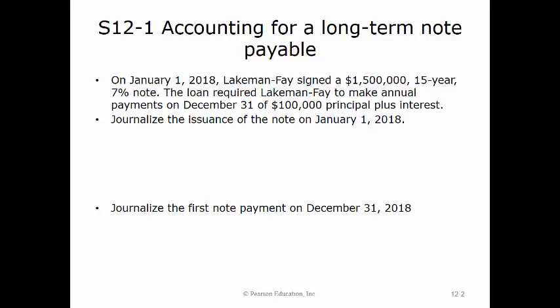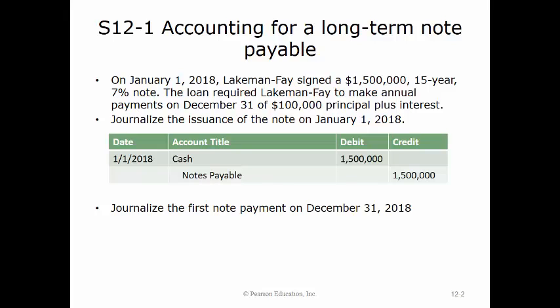On January 1st, 2018, Lakeman Faye signed a $1,500,000 fifteen-year, 7% note. The loan required annual payments on December 31st of $100,000 principal plus interest. The problem first asks that we journalize the issuance of the note on January 1st, 2018. To make this entry, we would debit cash and credit notes payable for the $1,500,000 face amount.